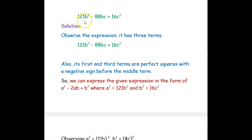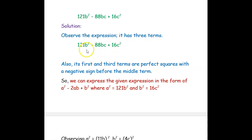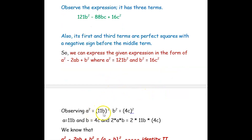Let's see one more expression: 121b squared minus 88bc plus 16c squared. Observing this expression, it has three terms. The coefficient of the first squared term is 121 and the last term is 16c squared — both are perfect squares. We can express the given expression in the form of a squared minus 2ab plus b squared, where a squared is 121b squared and b squared is 16c squared. From this, a will be 11b and b will be 4c.